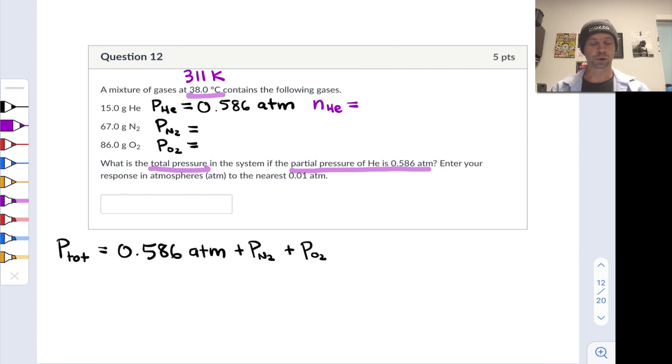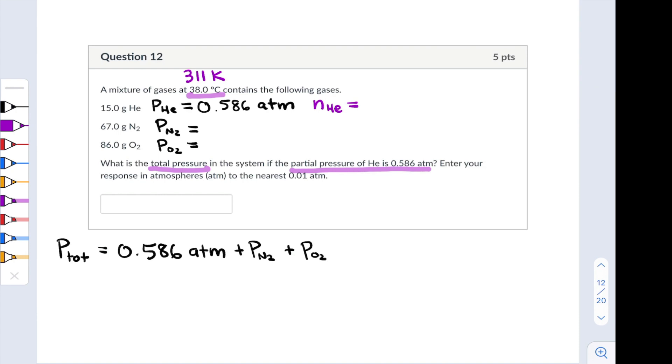We can find that ratio for helium by determining the number of moles. We take 15 grams and divide by the molar mass of helium, classic stoichiometry. When we do that, we arrive at 3.748 moles of helium.